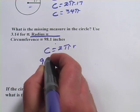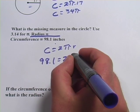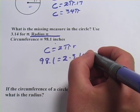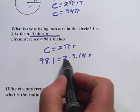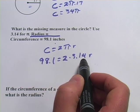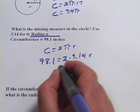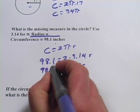98.1 goes in for circumference. Our 2 stays there, our π we're going to use 3.14 because that's what the problem tells us to use, and the r is missing. So that's what we're looking for. Let me just do this multiplication: 2 times 3.14, that's going to be 6.28 times r equals 98.1.